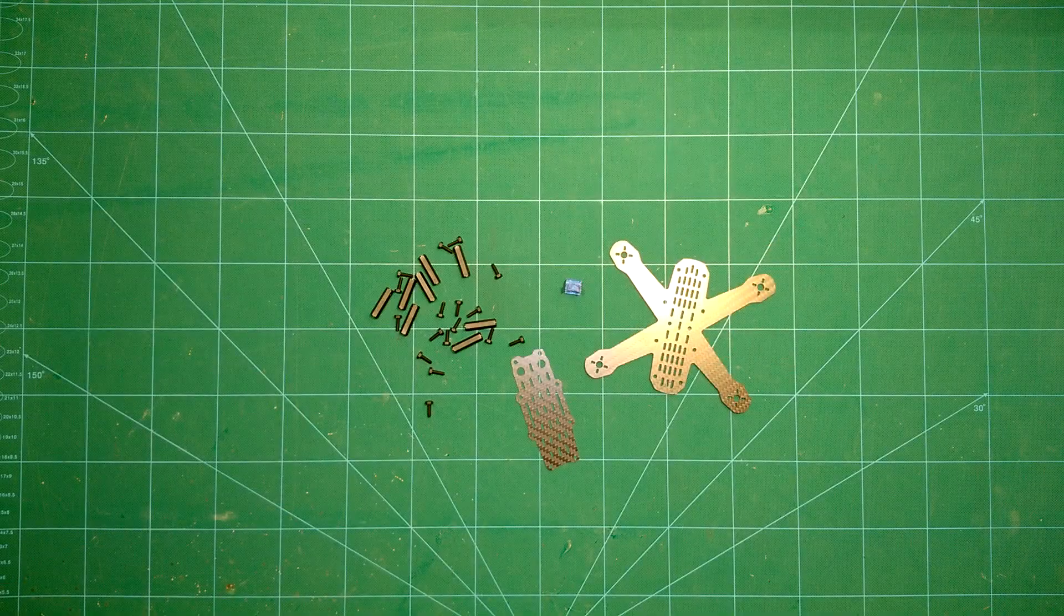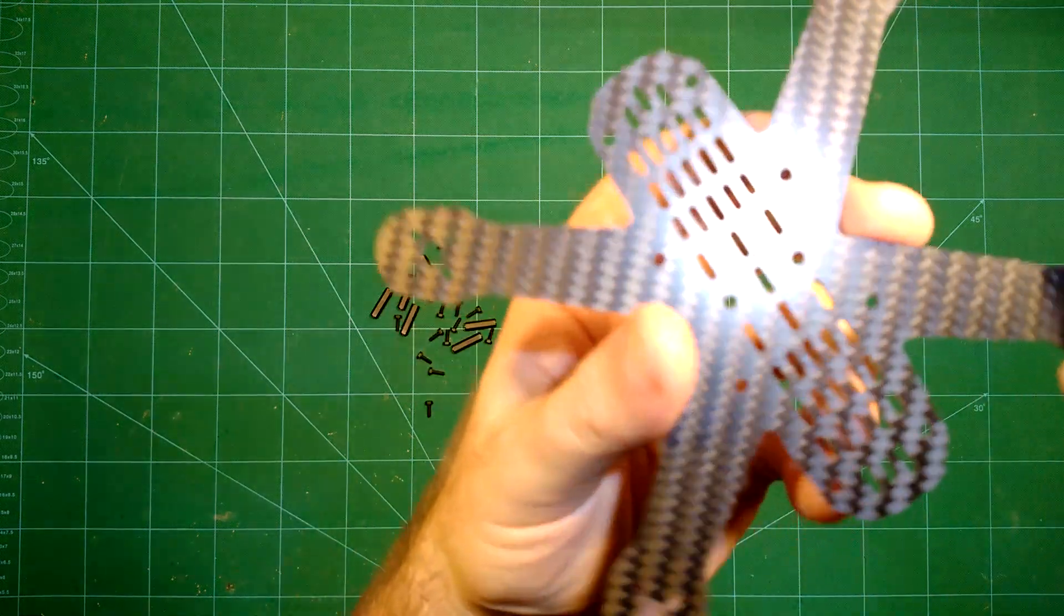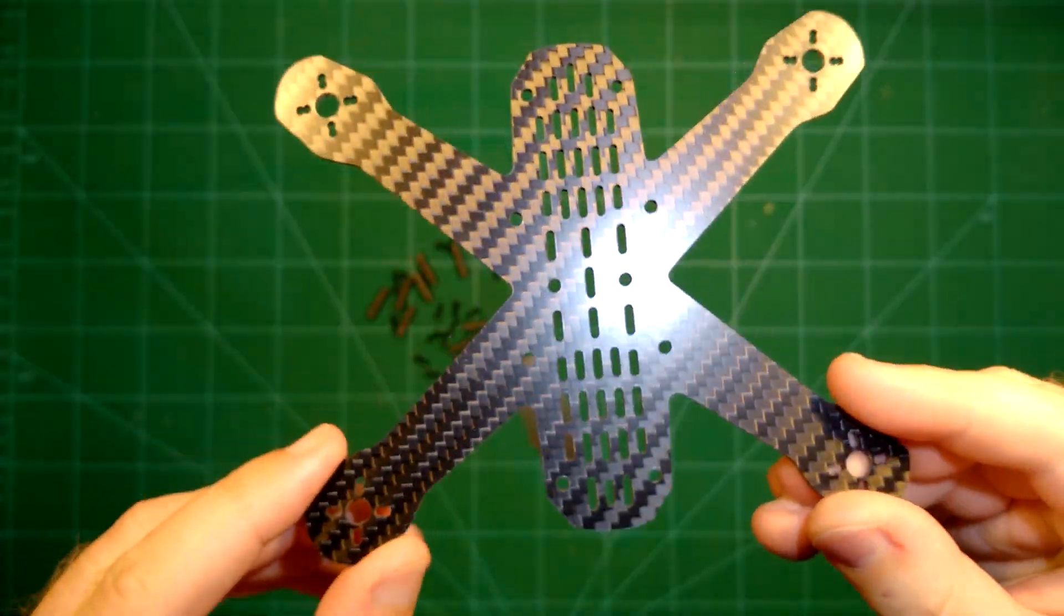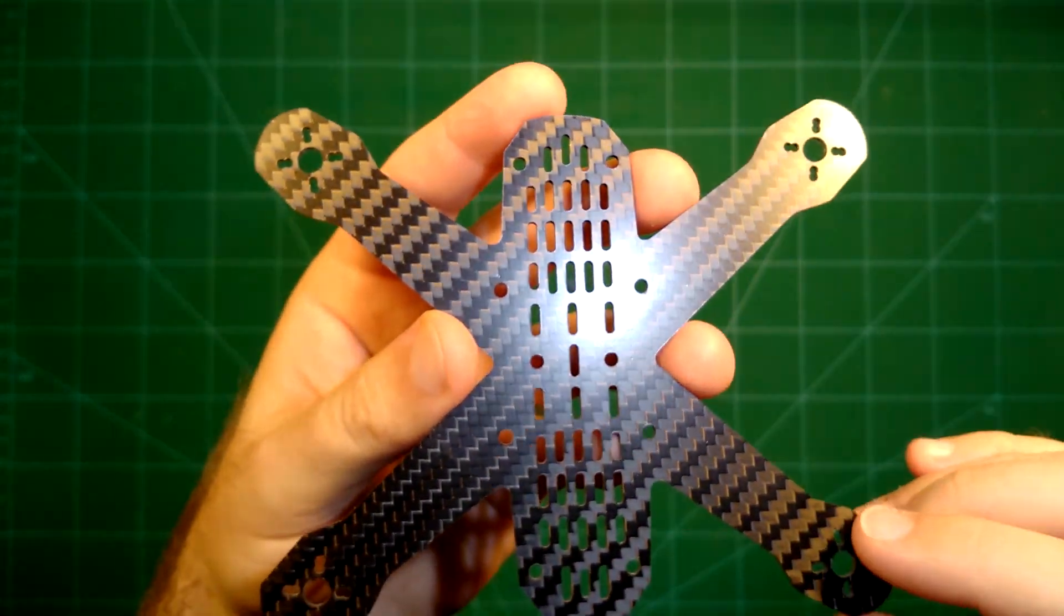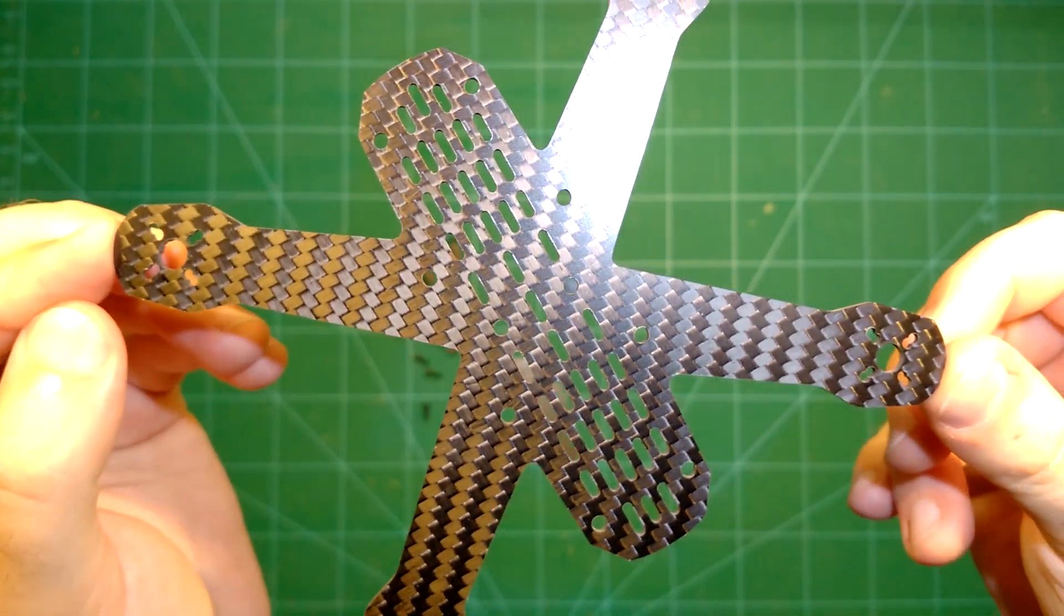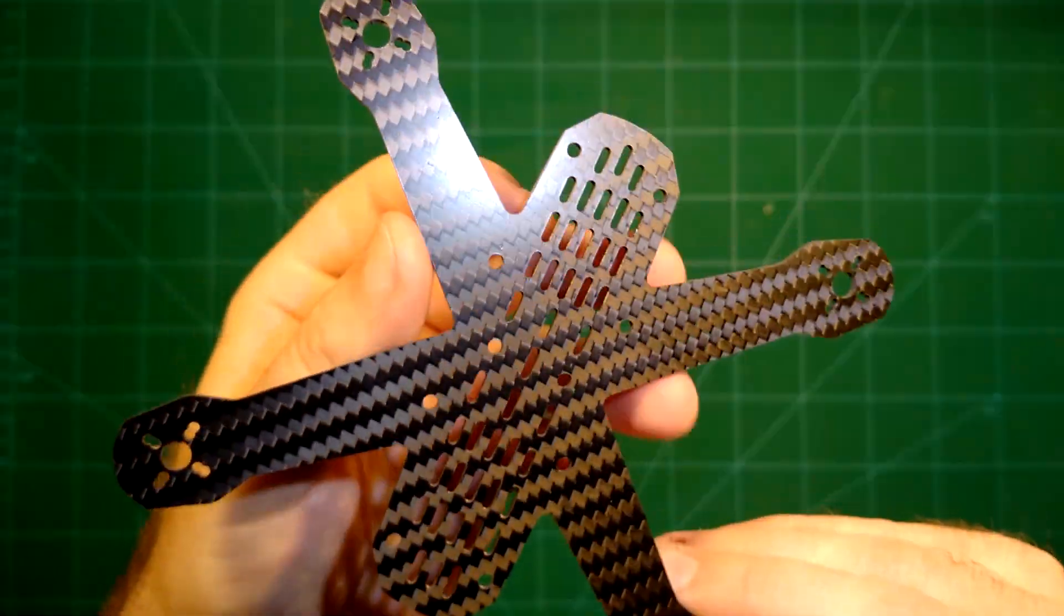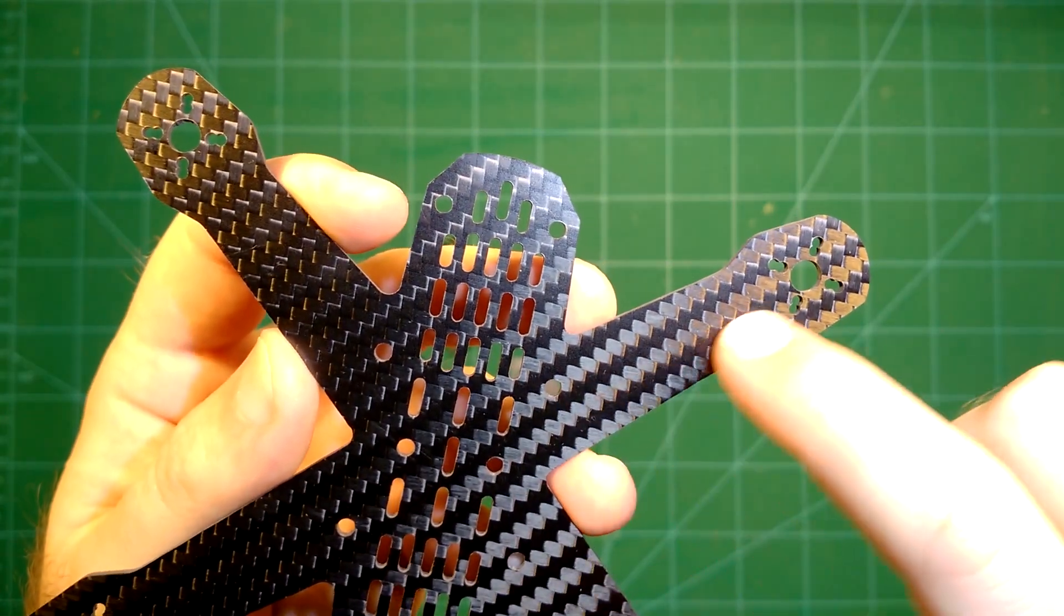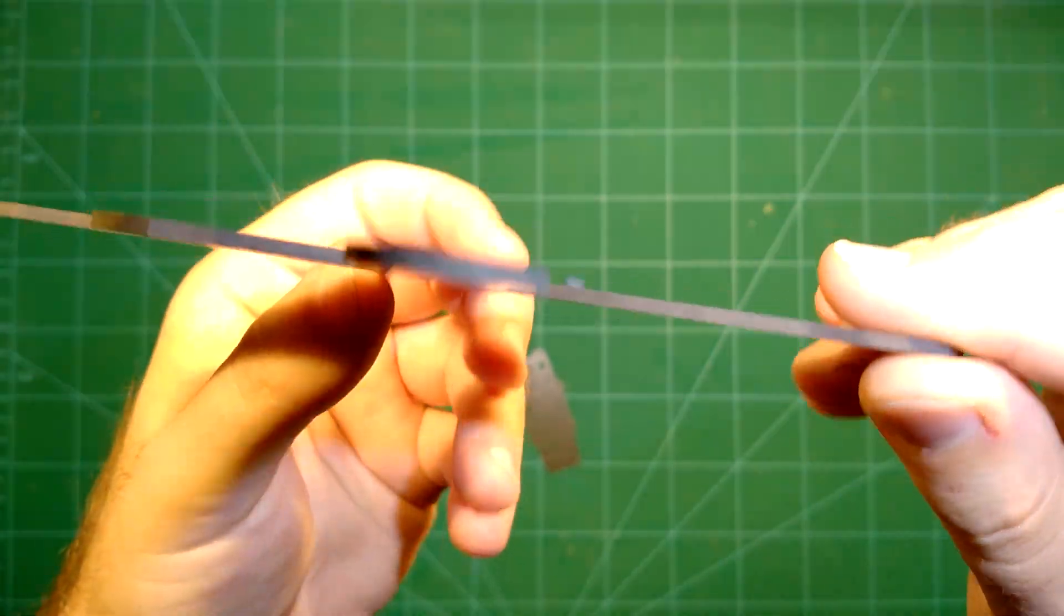Here we can see it unboxed in front of us. As you can see the whole frame is pretty simple. We have here this unibody main plate which combines the X style arms with the bottom plate. This is a 140mm size frame so 140mm from motor to motor. What I really like about this is that there are no unnecessary leave outs here which might weaken the arms. This looks quite nice.